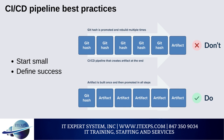CI/CD pipeline best practices: Start small — give the process time to evolve, let developers try different tools, and consider beginning with just a CI pipeline before adding CD. Define success by understanding intended benefits such as faster code building or lower error rework rates, then implement metrics to measure those criteria. Compare metrics against pre-pipeline performance and track them as the pipeline evolves to spot problems and invest in improvements.